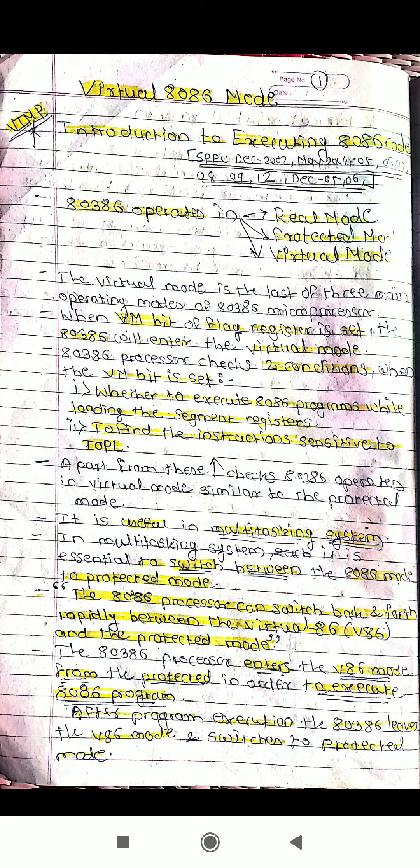For the real mode, the reset operation is the main part. For the protected mode, the PE — that is, the Protection Enable bit of the CR0 register — must be set. When the PE bit of CR0 is set, the processor enters into the 80386 protected mode. From the protected mode, this processor can switch into the virtual mode.